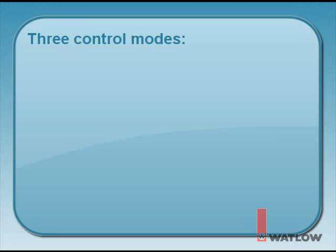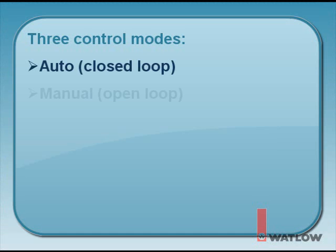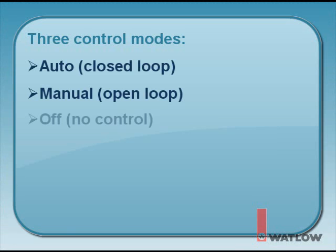The controller has three control modes of operation: auto mode, also referred to as closed-loop control; manual mode, also referred to as open-loop control; and off, where there is no control output.